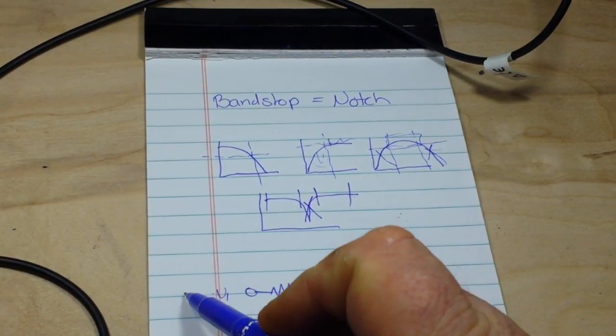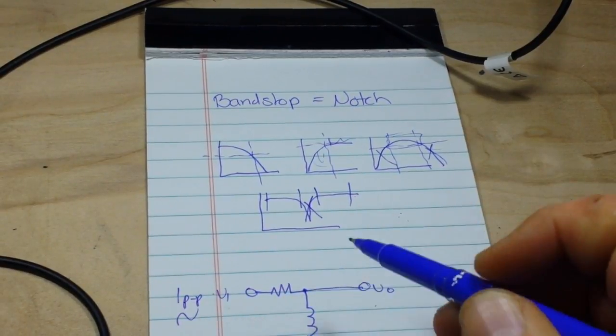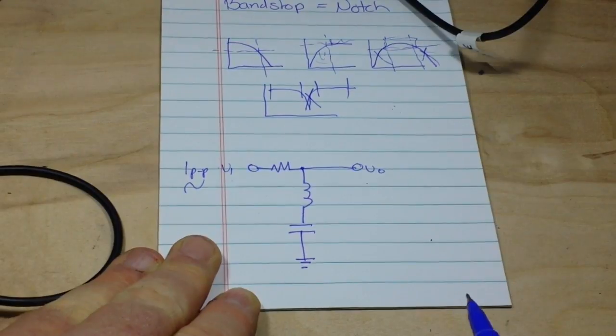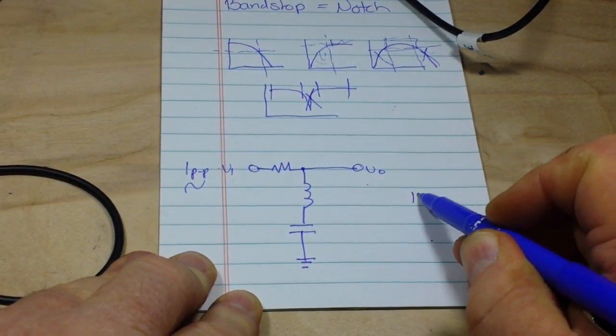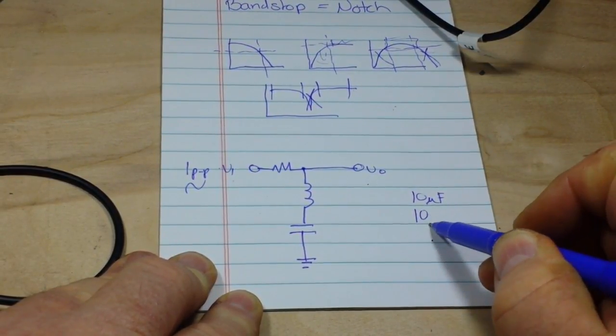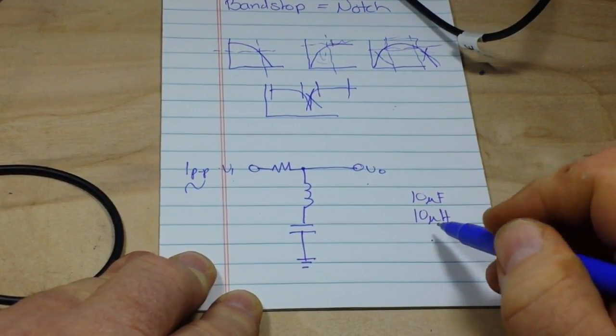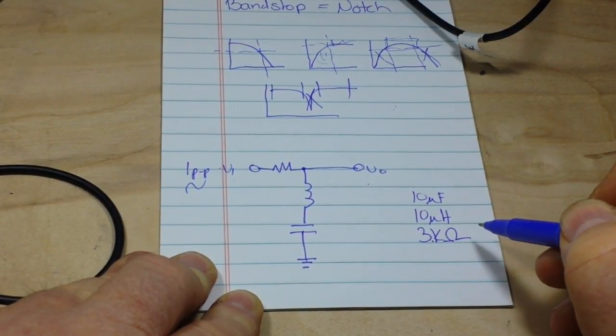And we are going to feed in here a 1-volt peak-to-peak sine wave. Now the values that we're going to use today are just common values that I have sitting around here. A 10-microfarad capacitor, a 10-microhenry inductor, and we're going to use a 3K resistor.